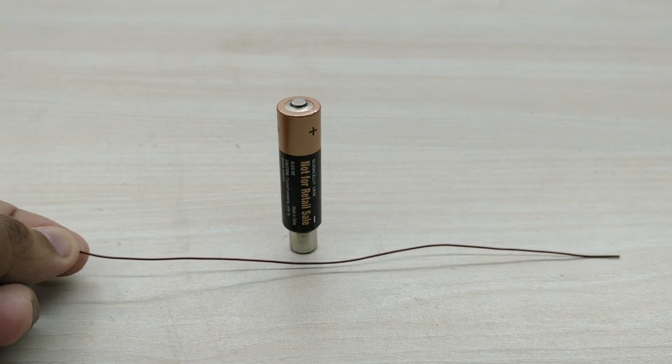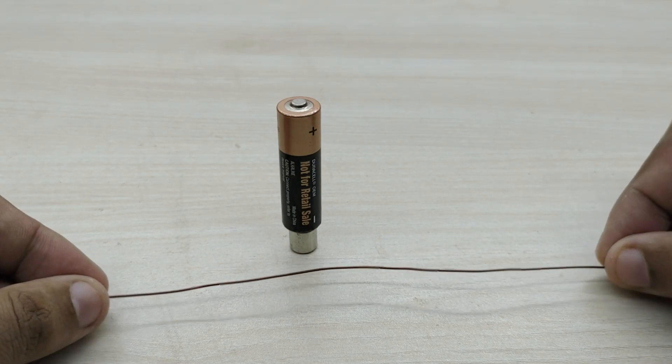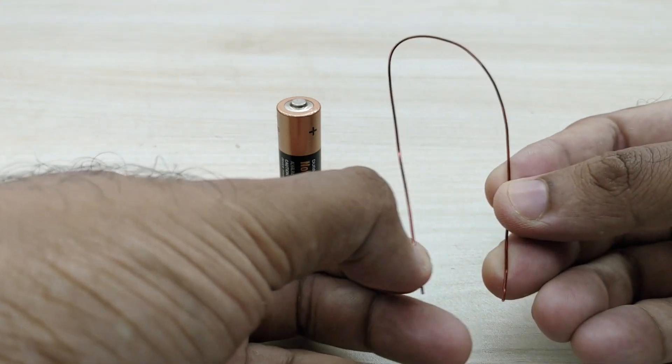Next, take a copper wire of approximately 15 cm length. Fold the copper wire exactly into two halves as shown.